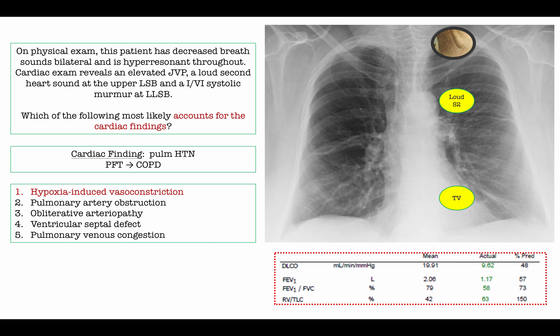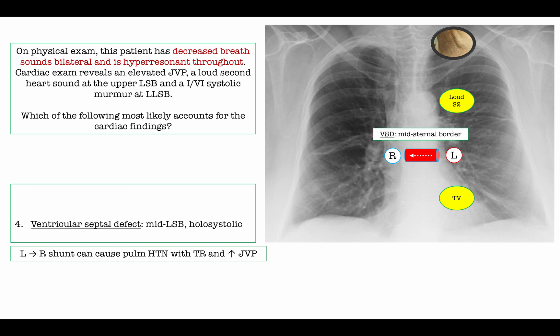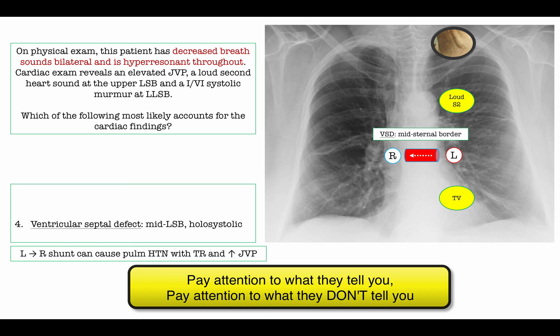Other causes of pulmonary hypertension include thromboembolism, primary pulmonary hypertension, and left-sided heart failure. Regarding VSD: left-to-right shunts can cause pulmonary hypertension, but the murmur is typically described at the mid-left sternal border, holosystolic, and altered by maneuvers — the rest of the physical exam does not support this diagnosis. Answer questions based on what they tell you and what they don't tell you.